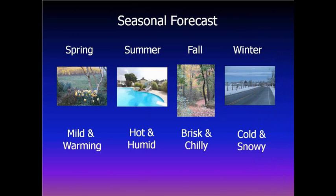A seasonal forecast — the one that all of us are familiar with. If you're in the northern hemisphere, you're looking forward to spring or summer. We have seasonal forecasts for spring, summer, fall, and winter. In spring, the temperature is going to be mild and warming. In summer, especially here in New Jersey, it gets hot and humid. In the fall, it can be brisk and chilly. In the wintertime, it can be cold and snowy, and in the northeast we've had some very graphic examples of that over the past several weeks.